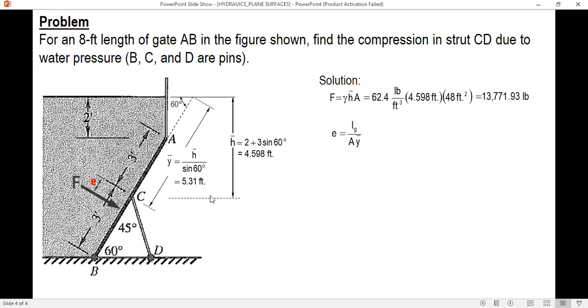And the value is 5.31 feet, so 4.598 divided by sine 60 is 5.31. So I is 1 over 12, the base is 8, the height is 6, the area is 48, 6 times 8, and then y bar 5.31. It's 0.565 feet.